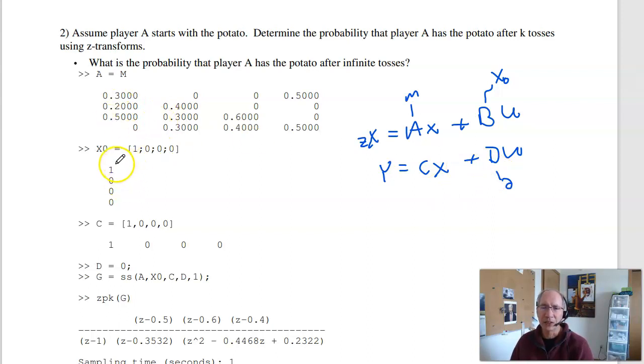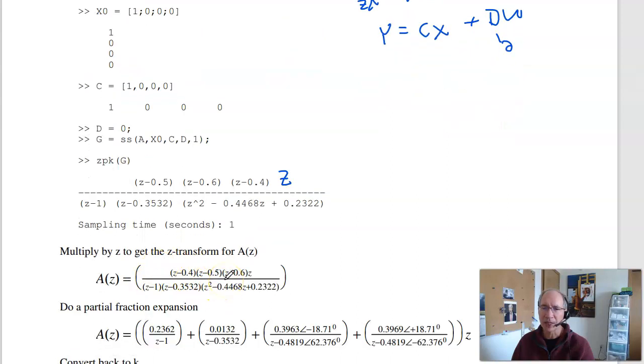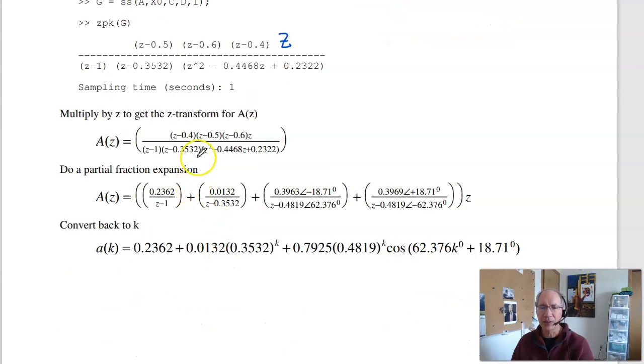So A is M. X0 is A has the hot potato initially. I want to look at the first state, that's A. Throw that in MATLAB. That's the MATLAB command state space. And this is how many seconds between tosses. Let's just say I toss the potato every second. Convert that to Z-transform. And here's the transform. An oddity of doing it this way is you're always off by Z. Multiply by Z, and that's the Z-transform for A. Now to find A of K, take the inverse Z-transform. Do a partial fraction expansion. Then take the inverse Z-transform, and here's each term. That's A of K. Plug in K equals 10. I get the same answer as problem number one. That's the second way to solve, using Z-transforms.